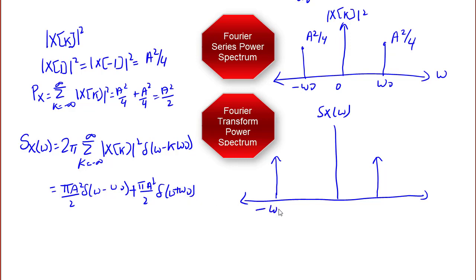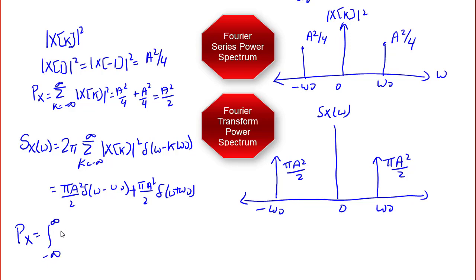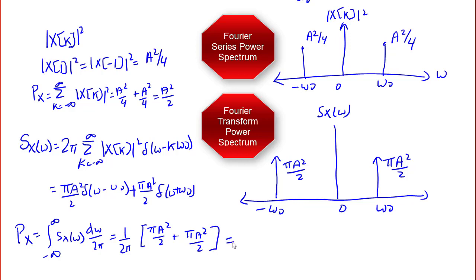To confirm conservation of power, we compute p_x = the integral from −∞ to ∞ of S_x(ω) dω over 2π, which equals (1/2π) times the total area under the impulses: (πA²/2 + πA²/2) = A²/2. This matches the earlier result, confirming conservation of power.